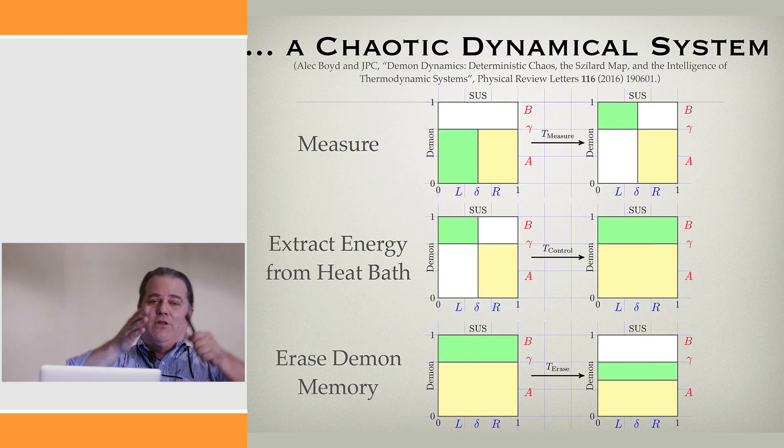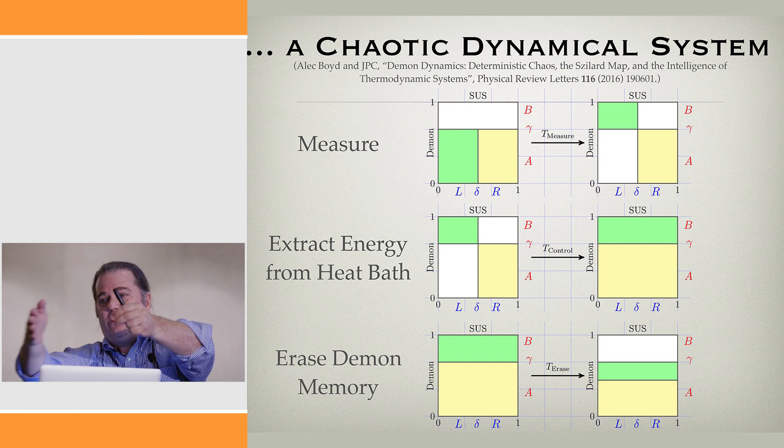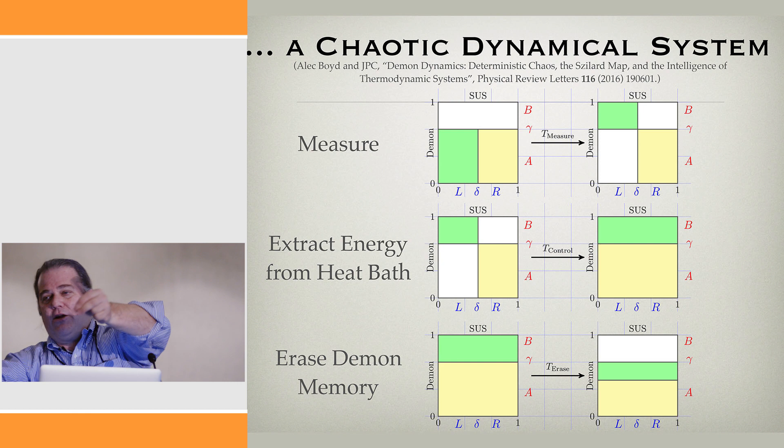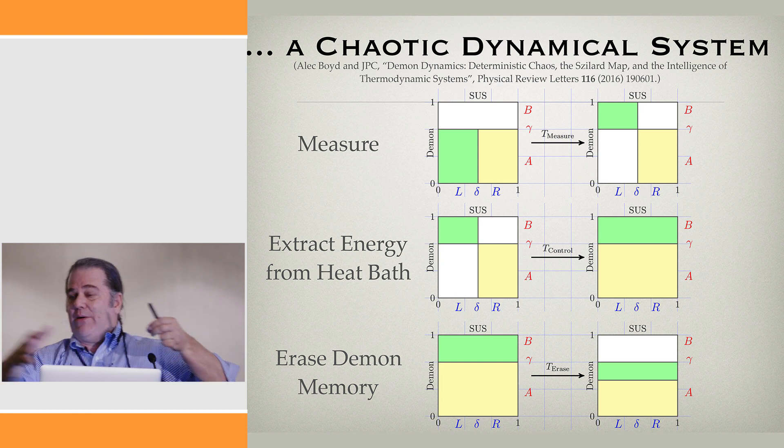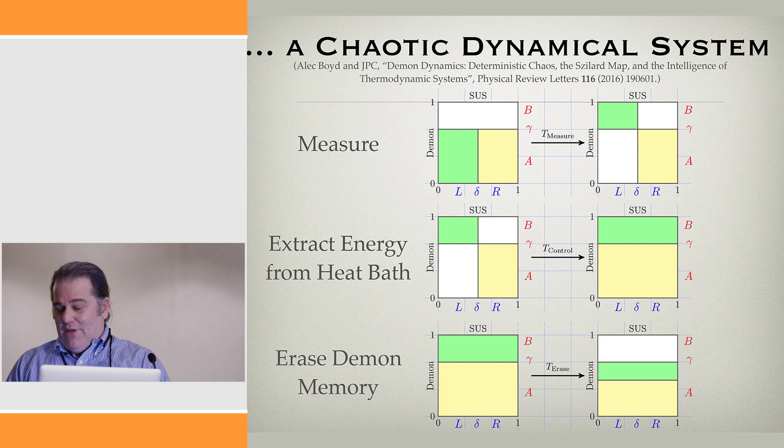He has a single molecule engine. I'll just quickly explain how it works. There's one molecule in a box. The demon puts a partition in and then observes what side of the partition the molecule is on. If the molecule is on the left side, it allows the partition to move to the right. Then the molecular interactions with the partition allow it to extract PdV energy. You can go through and reinterpret Maxwell's demon—there's a large demon here—in terms of a mapping of the unit square.